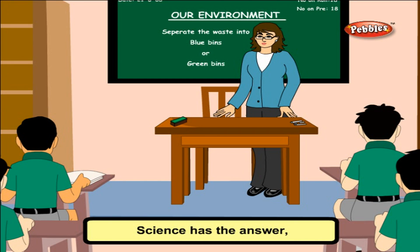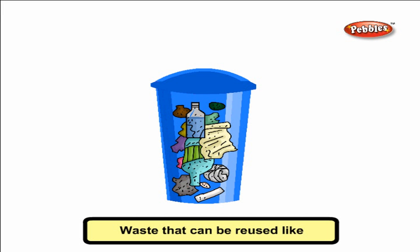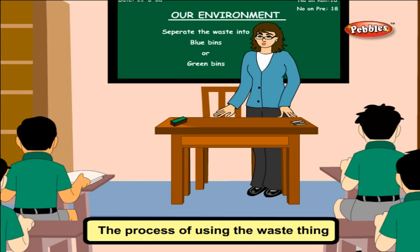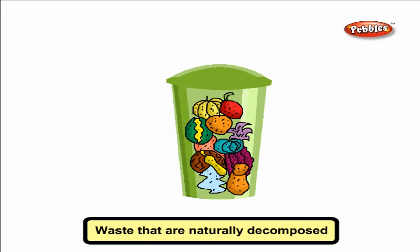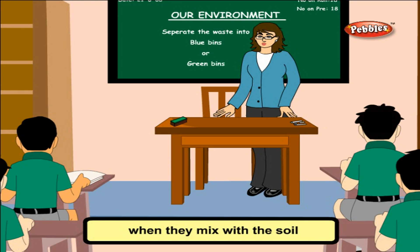Science has the answer. The first step is to separate all the waste materials into two groups. One, waste that can be reused like plastic, glass, paper etc. are put in blue bins. The process of using the waste thing again is called recycling. Waste that is naturally decomposed and mixes with soil, like food items, is put in green bins. When they mix with the soil, they help plants to grow well.